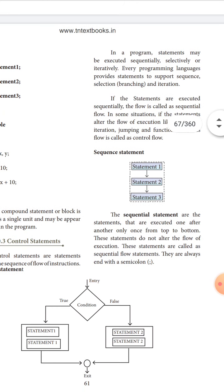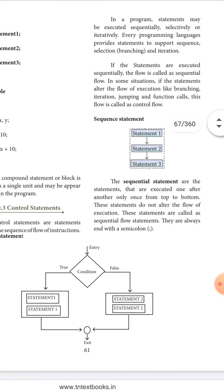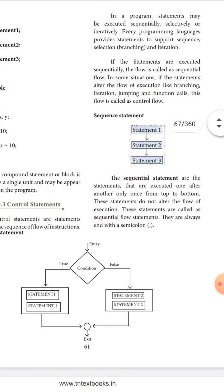If statements are executed sequentially, the flow is called sequential flow — they are executed one by one in order. In some situations, statements alter the flow of execution in a branching format. This includes iteration, jumping, moving from one statement to another, skipping statements, and function calls. All of these are called control flow.